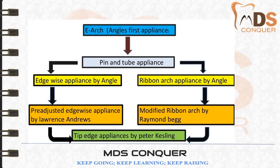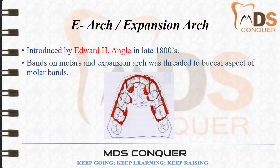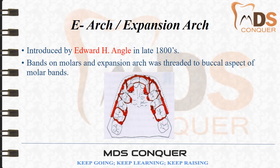The E-arch expansion appliance was introduced by Edward Hartley Angle in the late 1800s. Bands were placed only on molars, and an expansion arch was threaded to the buccal aspect of the molar bands. The expansion arch was joined to all teeth with elastic thread. The expansion arch produced heavy forces and movements were basically only tipping in the lateral direction — no bodily movement was possible. These were the drawbacks of this appliance.